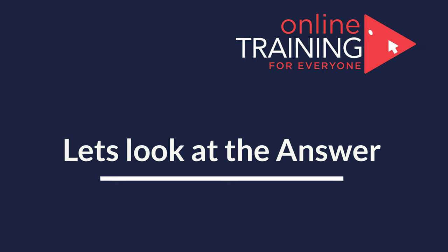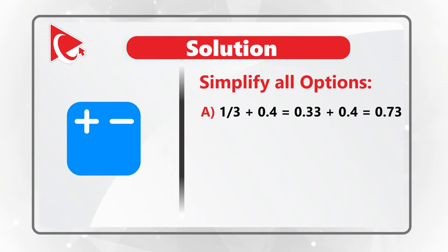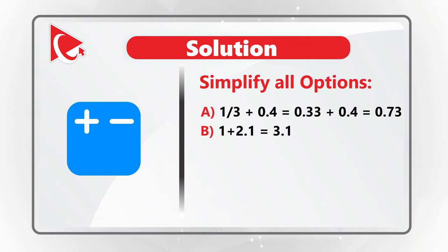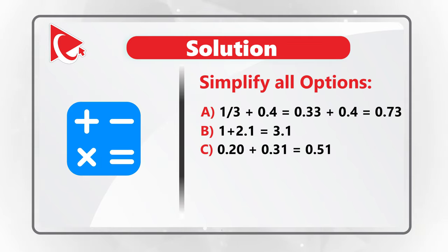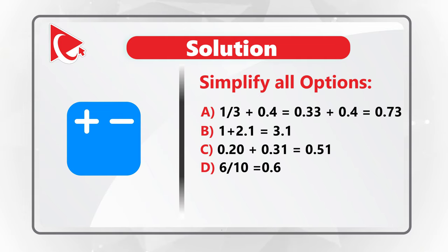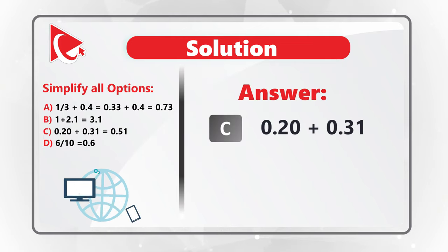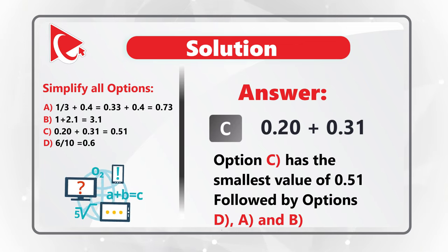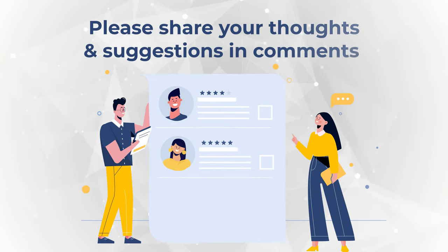Option A: 1/3 plus 0.4 equals 0.33 plus 0.4, which is 0.73. Choice B: 1 plus 2.1 equals 3.1. Choice C: 0.20 plus 0.31 equals 0.51. And choice D: 6 tenths equals 0.6. Looking at the answers, option C has the smallest value of 0.51, followed by option D, then A, then B. Please share your thoughts and suggestions on how to better solve it in comments.